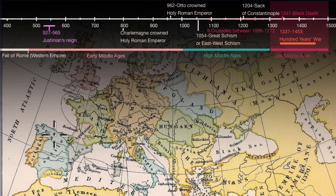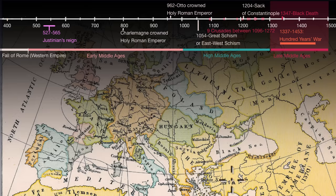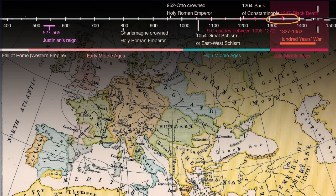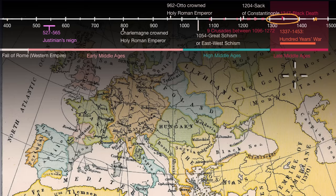By this point, much of the Iberian Peninsula has been reclaimed from Muslim rule, although you still have Muslim rule in Granada. Most of the Byzantine Empire has now been taken over by the Ottomans, save Constantinople. Constantinople eventually falls in 1453, ending the Byzantine Empire formally. This map shows roughly what Europe looked like in the 14th century.